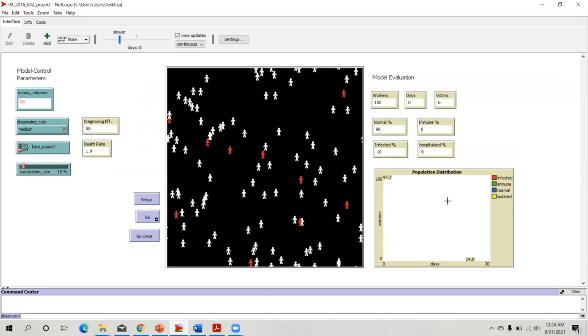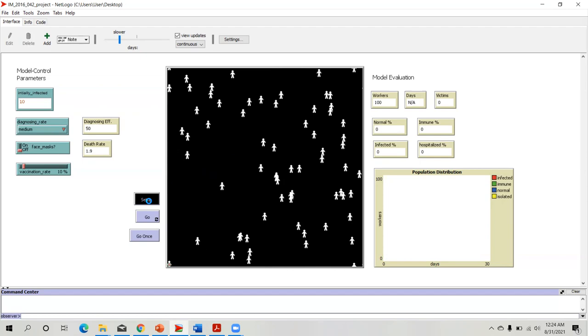Initially, I have entered an initial infected employee count of 10 to the system. I will be choosing medium as the diagnosing rate, which is 50%. For the time being, I will not let the employees wear face masks. The vaccination rate, I will set to 10%. And I will set up the system.